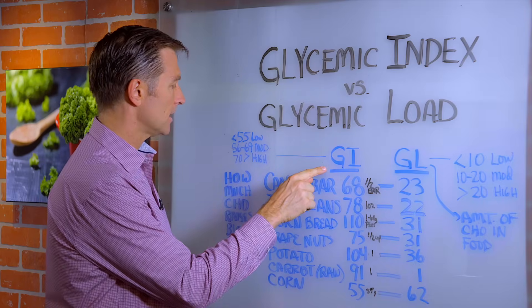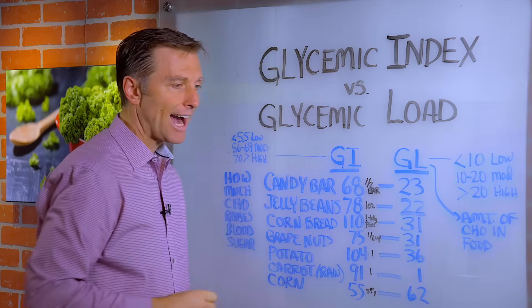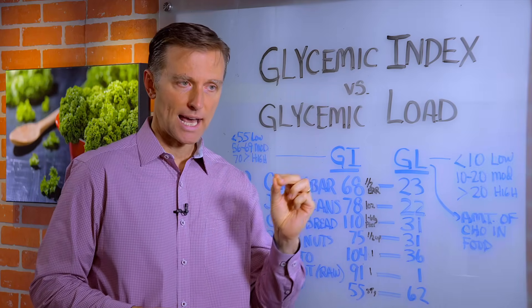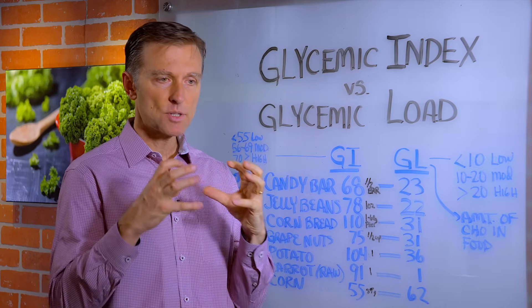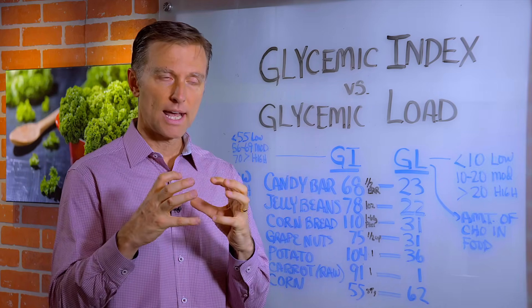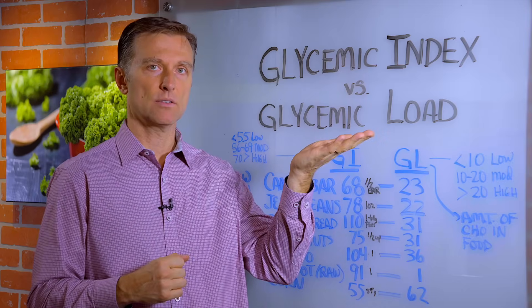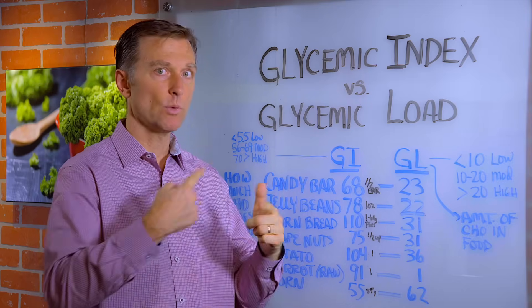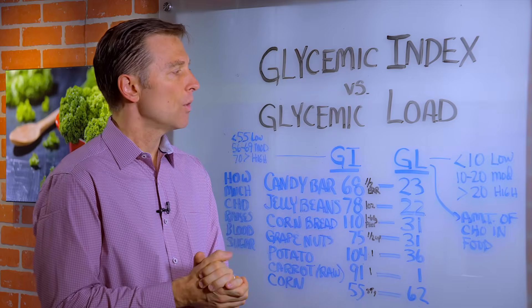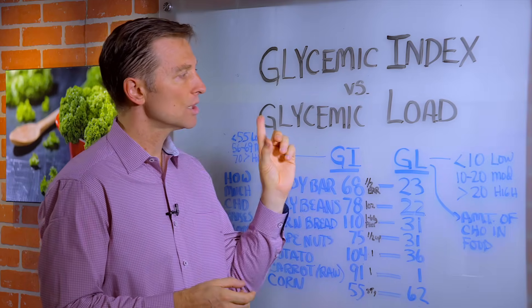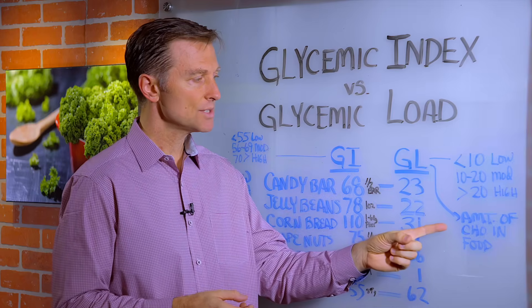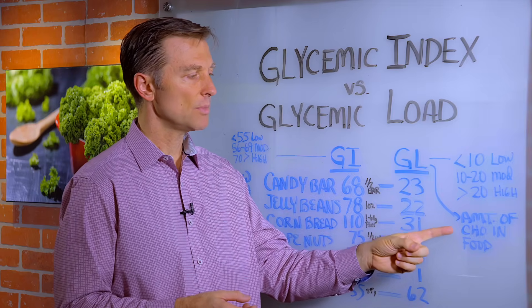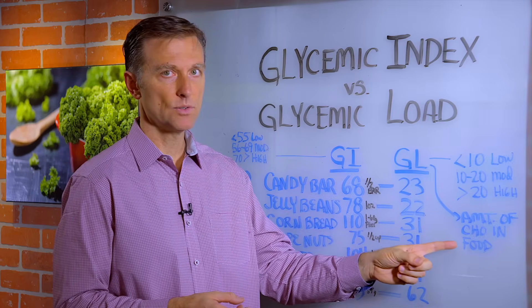The glycemic index is how fast that carbohydrate is digested or broken down into the blood, and how much power that has to raise the blood sugar and the speed at which it raises the blood sugar. Whereas the glycemic load is a little different — it's the concentrated amount of carbohydrate, or the amount of carbohydrate in the food.